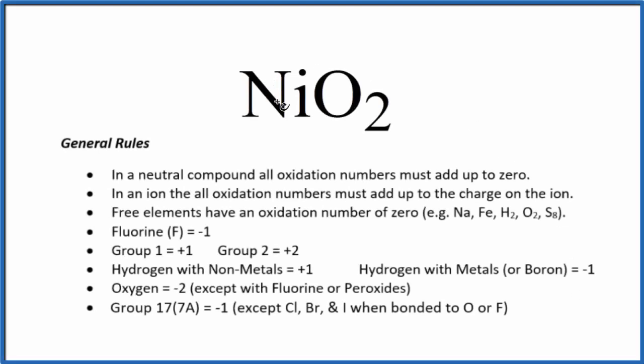To find the oxidation number for the nickel in nickel dioxide NiO2, we'll use these rules. Since we don't have a negative or positive sign after the NiO2, it's a neutral compound. All the oxidation numbers are going to add up to zero.